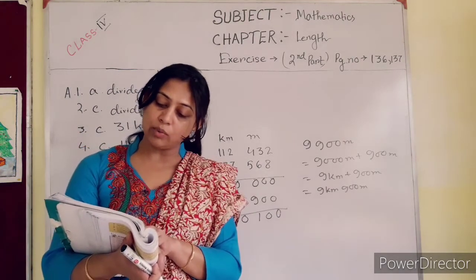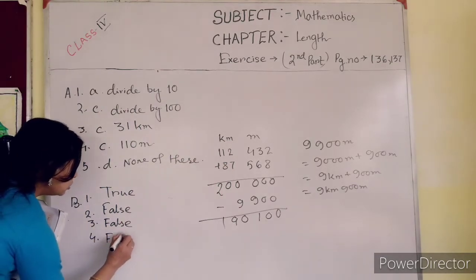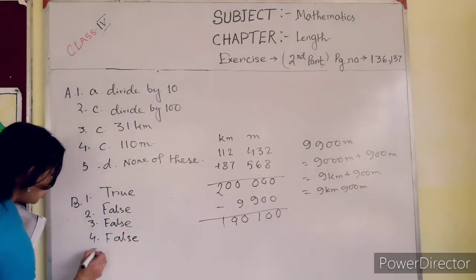4. 1 kilometer equal 1000 millimeter. Also, this one is false. 1 kilometer equal 1000 meter, so this one is false. Now number 5.